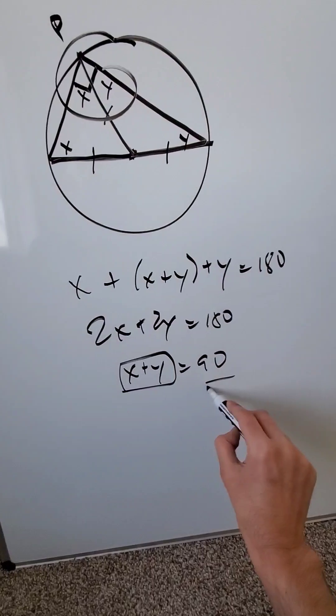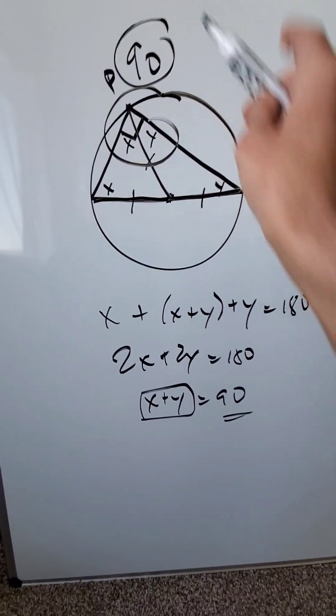Wherever I have an X plus Y must be equal to 90 and this angle right here is X plus Y. It must be a right angle.